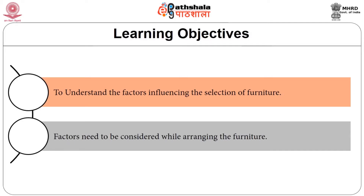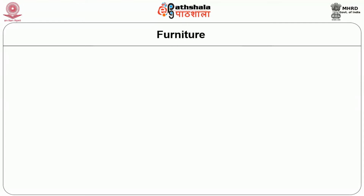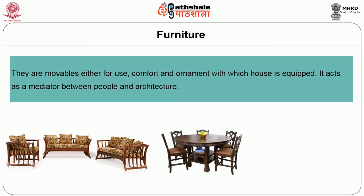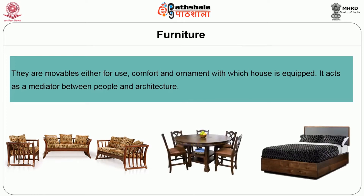Today we shall study the various aspects of the selection and arrangement of furniture. The objectives include understanding the factors influencing the selection of furniture and what factors you have to consider while arranging the furniture. Furniture are movables either for use, comfort and ornament with which houses are equipped. It acts as a mediator between people and architecture.